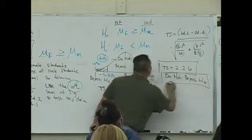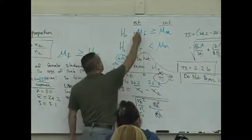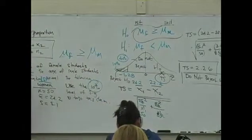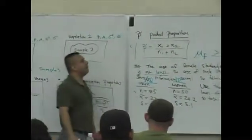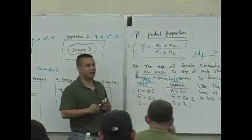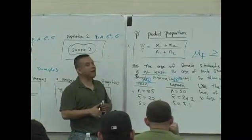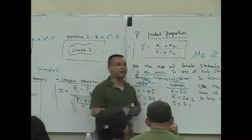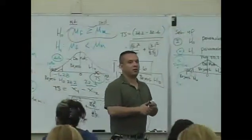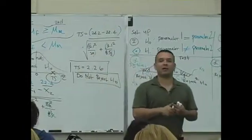Do not reject the null. You're not rejecting the null. So your sample data supports that null hypothesis, meaning that the mean age of women is at least the mean age of men, so what you can say is that the mean is a typical age or a center age of a group of women.